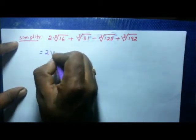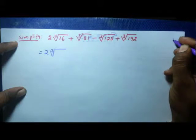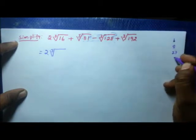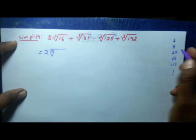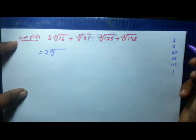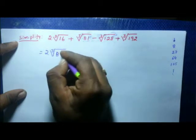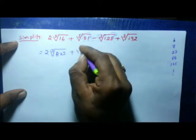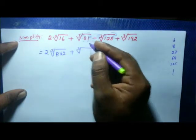You should know the cube numbers. If you multiply the same number three times you get a cube number: 1, 2 into 2 into 2 is 8, then 27, 64, 125 — these are called cube numbers. Now write 16 as a product of a cube number and another number: 8 times 2 is 16. So 8 is a cube number and 2 is the other number. For 81, write 27 times 3, since 27 is a cube number.